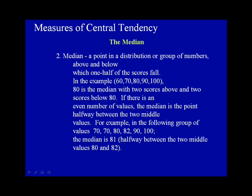The median. The median is a point in the distribution or group of numbers above and below which one half of the scores fall. In the example 60, 70, 80, 90, and 100, 80 is the median, with two scores above and two scores below 80.